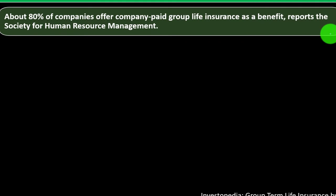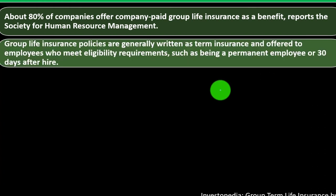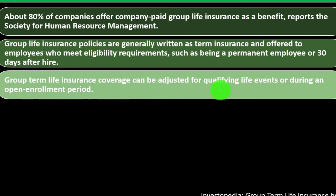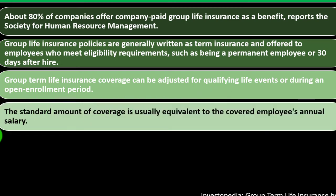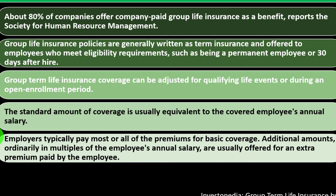About 80% of companies offer company-paid group life insurance as a benefit, according to the Society for Human Resource Management. Group life insurance policies are generally written as term insurance and offered to employees who meet eligibility requirements, such as being a permanent employee or 30 days after hire. Coverage can be adjusted for qualifying life events or during an open enrollment period. The standard amount is usually equivalent to the employee's annual salary, with additional amounts in multiples of that salary offered for an extra premium paid by the employee.